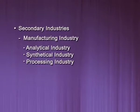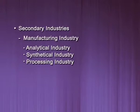The third is processing industry. Under processing industry, we process the raw material to make finished goods. For example, textile industry. The fourth one is assembling industry. Under this industry, we assemble different parts to make a new product.